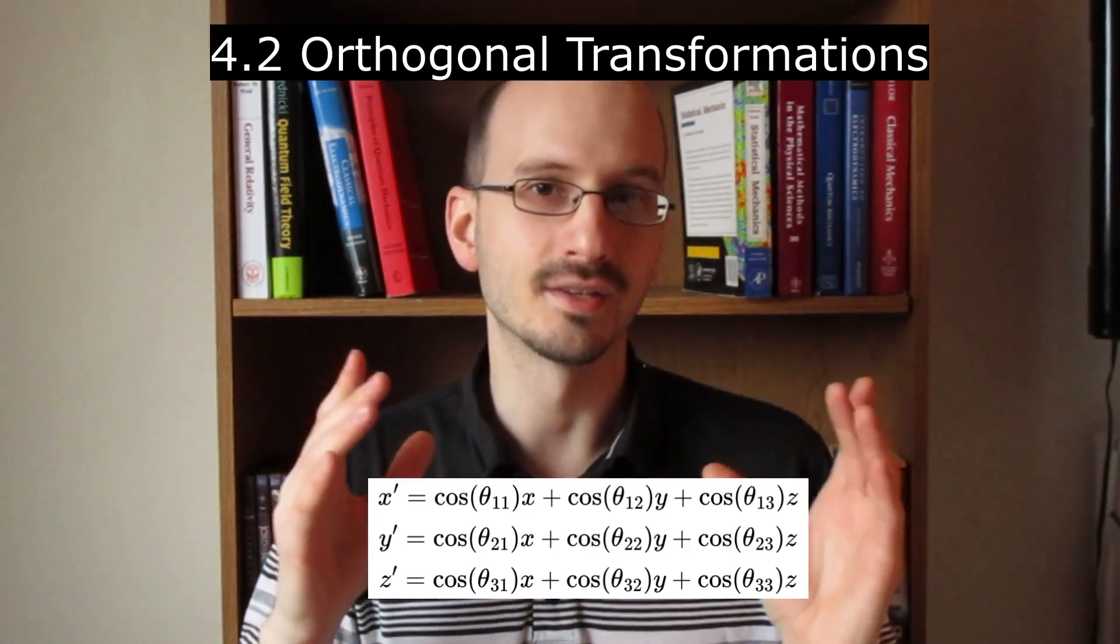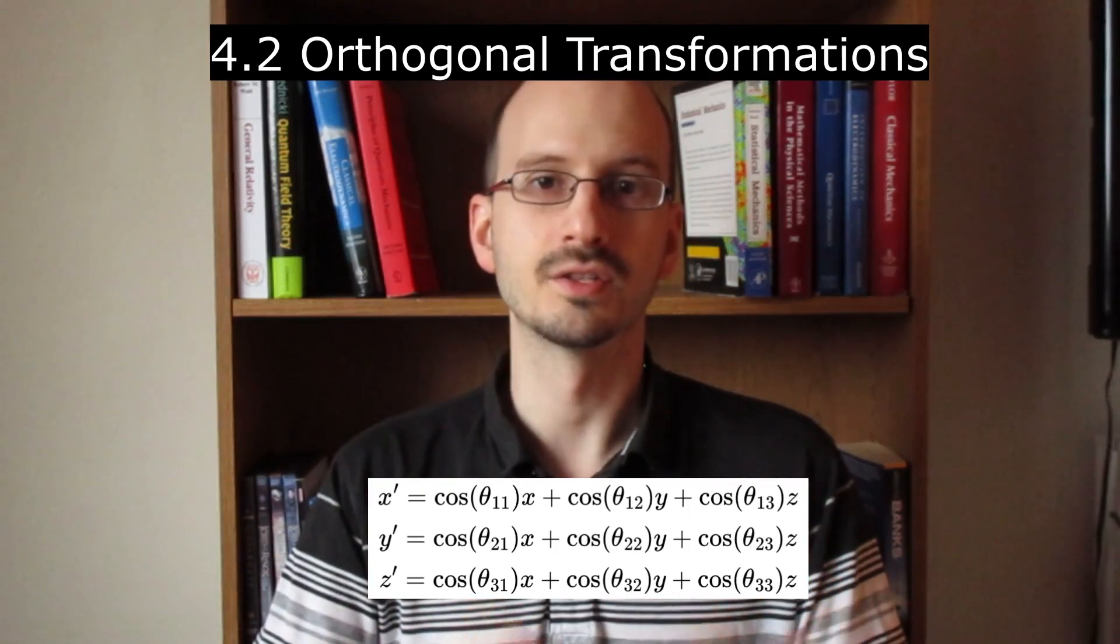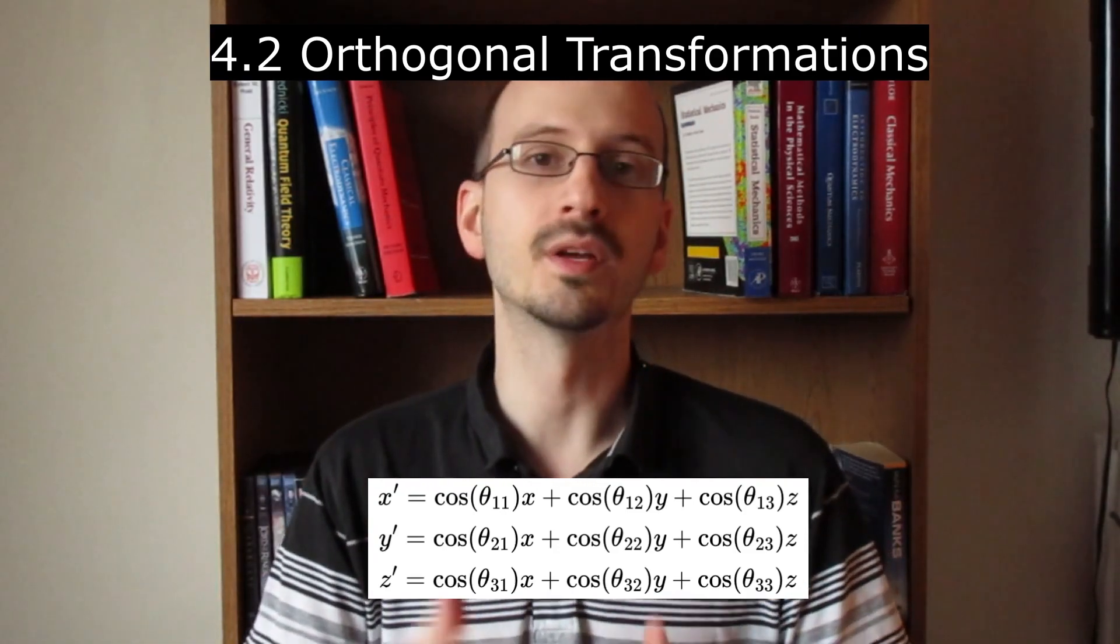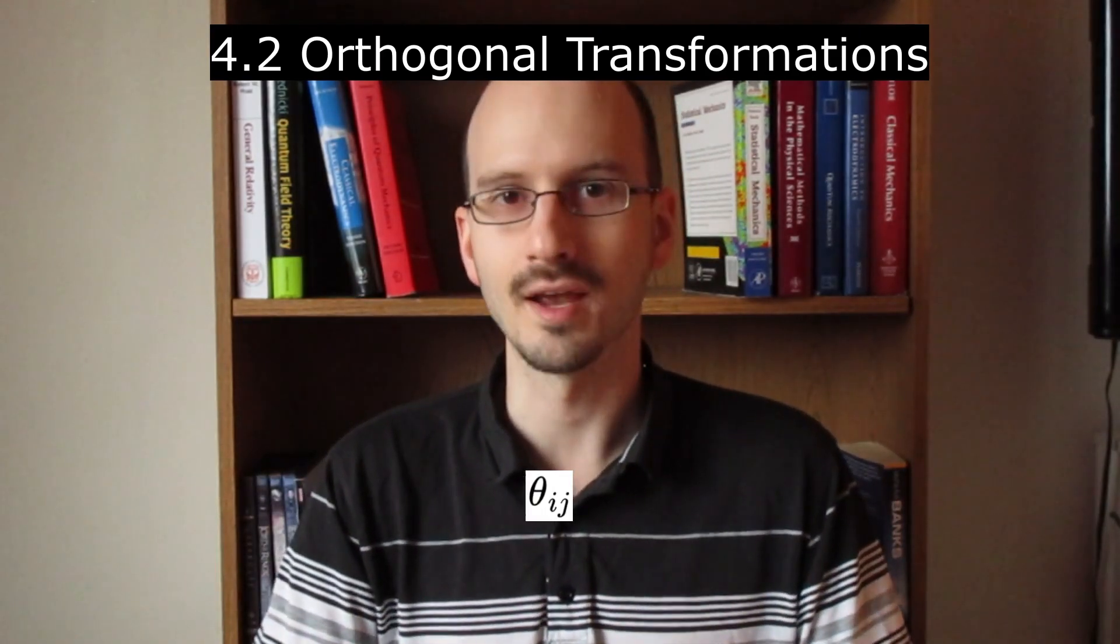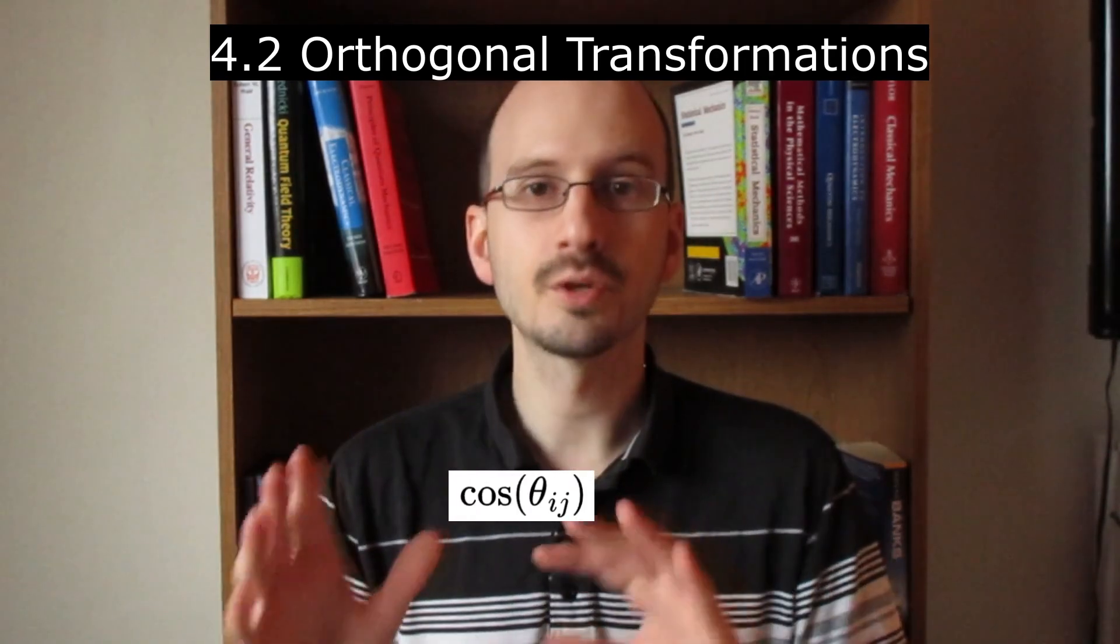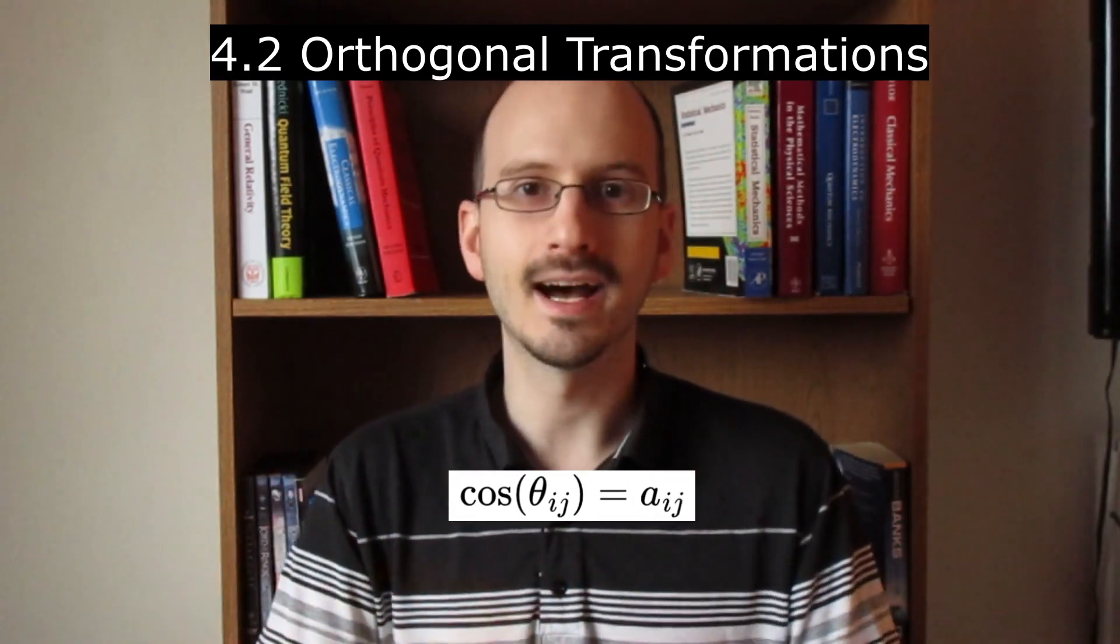Each of these angles has number indices on it. In math, we label those with letters. So we don't have to write out all nine of these every single time. We can simply write theta ij. Next, we notice that for every angle, we take the cosine of it. So we simplify it by instead of writing all this, we just write aij.